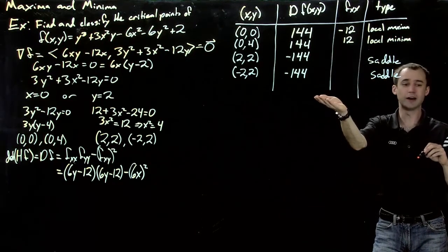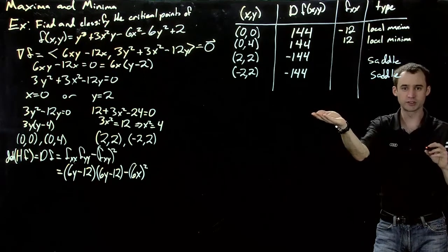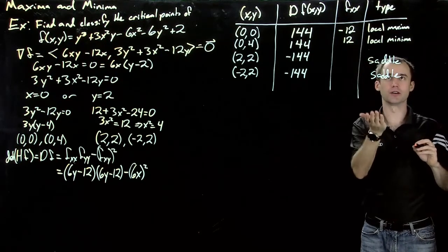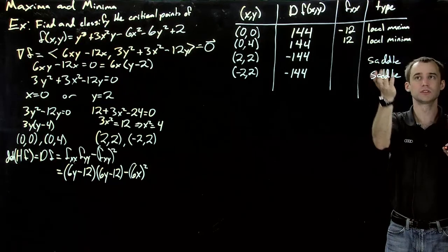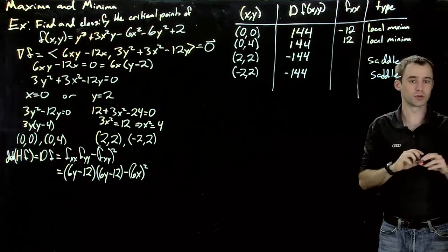And here we have found all of the critical points and what they are. So we have two saddle points, a local maxima and a local minima.